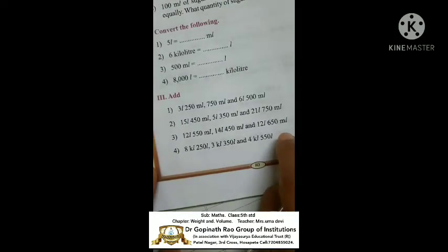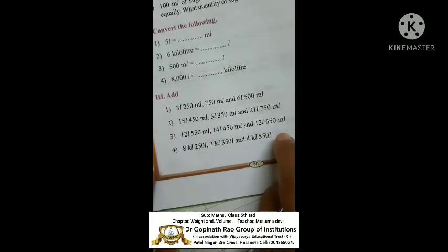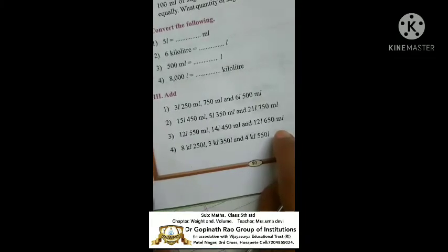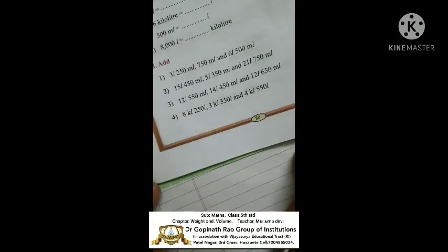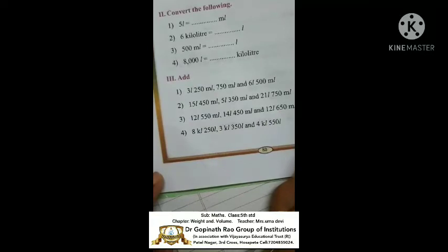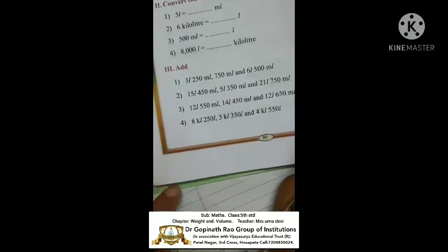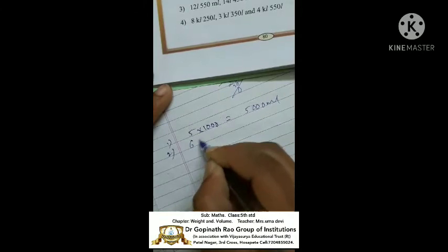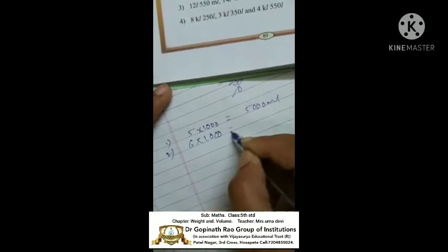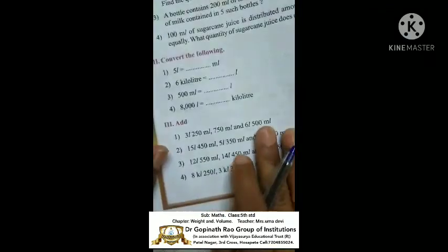Second conversion: 6 kilolitres equals how many litres? Kilolitres is the higher value, litres is smaller, so we use multiplication. One kilolitre equals 1000 litres. Therefore 6 into 1000 equals 6000 litres.